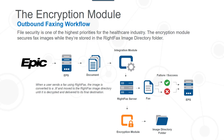When a user sends a fax using WriteFax, the image is converted to a TIFF and moved to the WriteFax image directory until it is decrypted and delivered to its final destination. As you can see in this diagram here, the workflow is similar as before: Epic through EPS, through the document repository, the integration module grabs it, everything happens the same. But now, when you're storing these faxes at rest in that image directory folder in the bottom right, they are being encrypted.